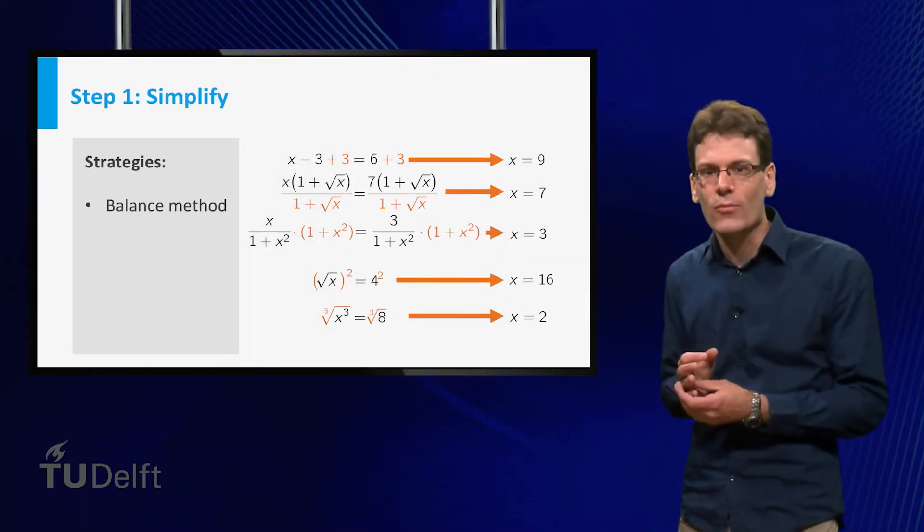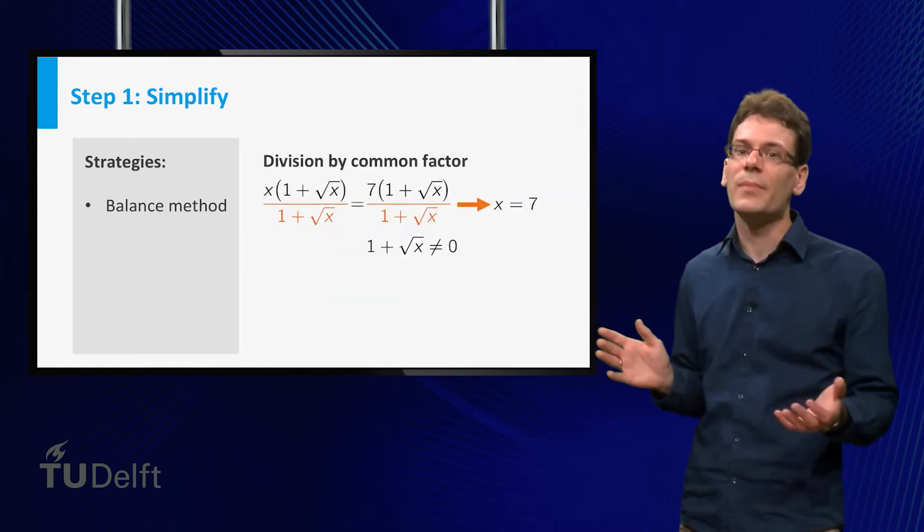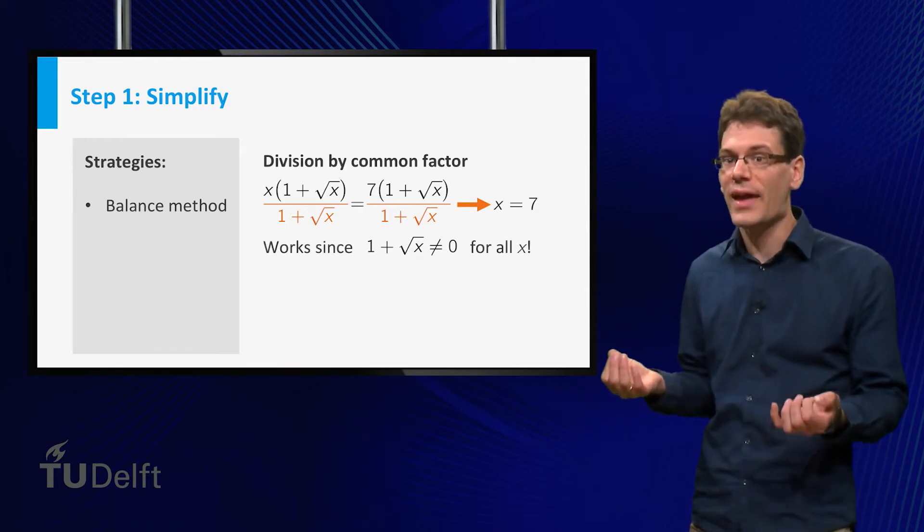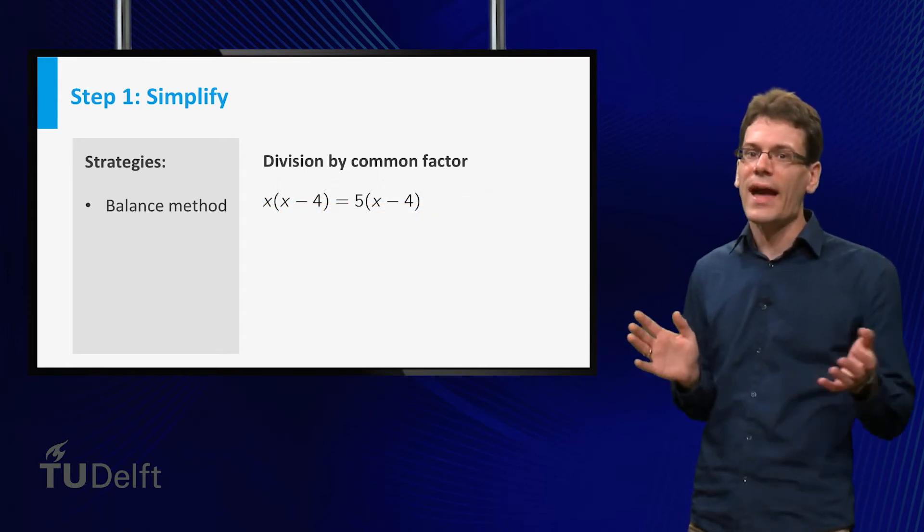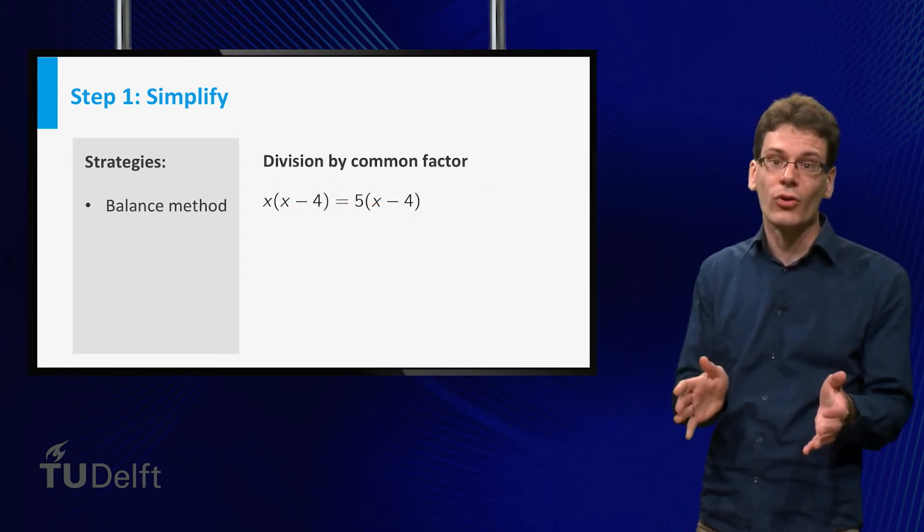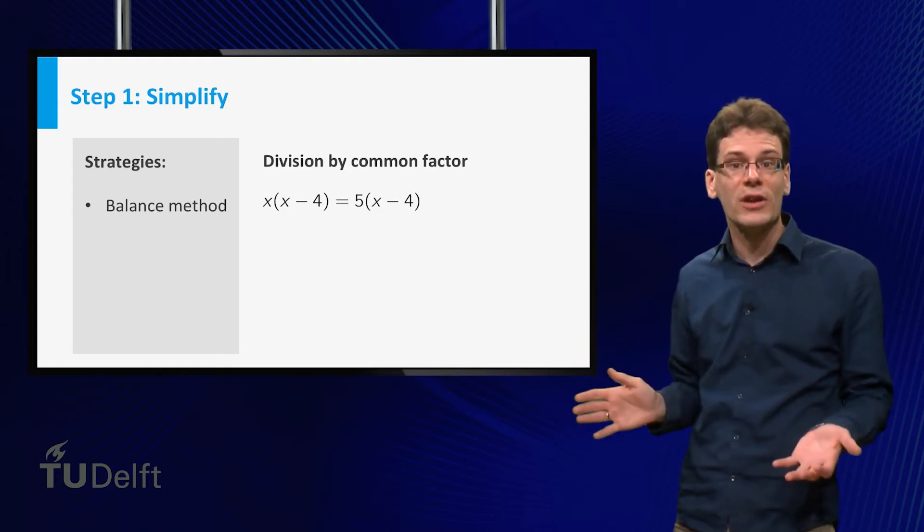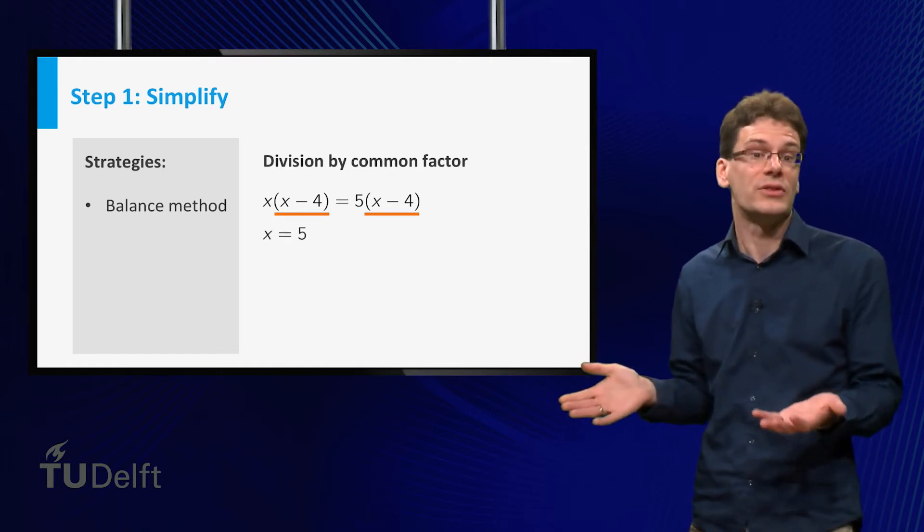I would like to add some warnings. Be careful if you divide by a common factor. In the example we were divided by 1 plus square root of x. This is possible since 1 plus square root of x is non-zero for all x. But consider the example x times x minus 4 equals 5 times x minus 4. As long as x minus 4 is non-zero, you can cancel this factor and obtain x equal to 5. This is a solution.